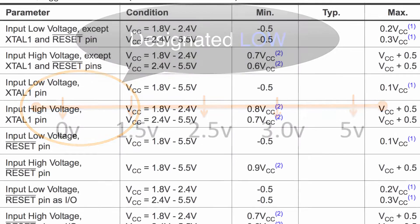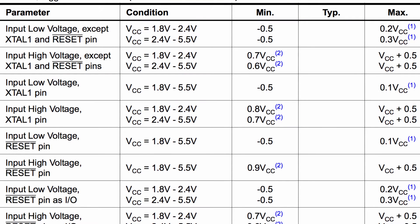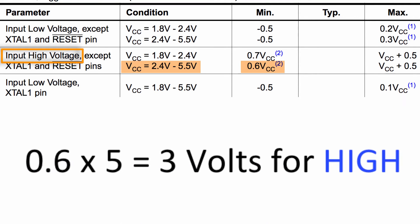Well what about high? If we look at the data sheet again, it says for input high voltage with a VCC between 2.4 and 5 volts, it says 0.6 VCC minimum. So we've got 0.6 times 5, which is VCC, that gives us 3. So the minimum voltage for our pin to read high is 3 volts.